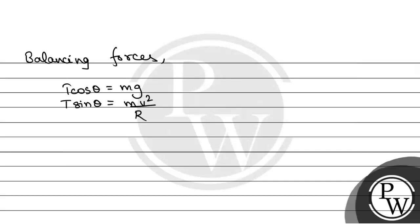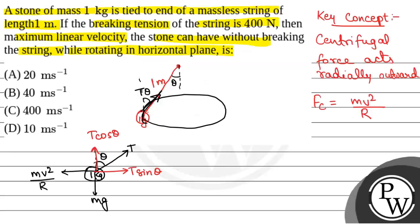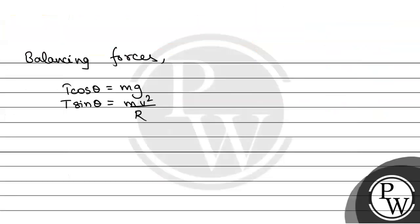So V²/R — R will be equal to the length of the string, that is R = 1 meter. We have to find V, and T will be equal to the maximum breaking tension. M is also 1 kg. So we have T cosθ = 1 × g = 10, giving T cosθ = 10. This is equation 1.